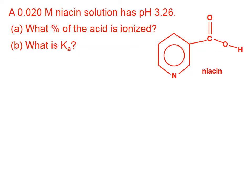Let's try this problem. We have some niacin — here is the structure of a niacin molecule — and we want to know what percentage of the acid is ionized and what the Ka value is. The H that could potentially be donated is the one on the far right, connected to oxygen, not the four hydrogens around the outside of the benzene-like ring, which are connected to carbons and will definitely not be donated. And of course, because this is a weak acid, not very many of those will pop off.